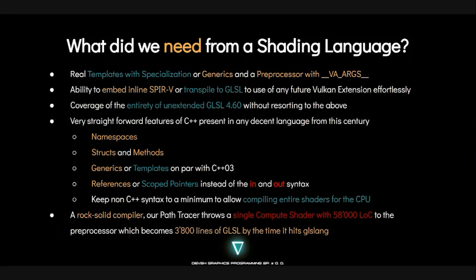So what did we need from a shading language? This is when I started looking into possible replacements to GLSL. We wanted real templates for specialization or at worst generics, and a preprocessor with VARX. We wanted the ability to embed inline SPIR-V or transpile to GLSL so you could plop in new features without needing to expose all of them in our shading language. And obviously we wanted namespaces, structs, methods, references or scoped pointers instead of the weird in-out thing from HLSL and GLSL, and we wanted to keep the non-C++ syntax to a minimum to allow compiling entire shaders for the CPU.